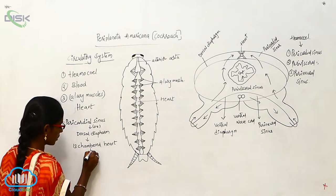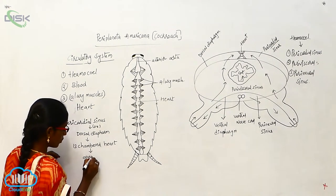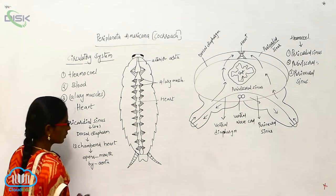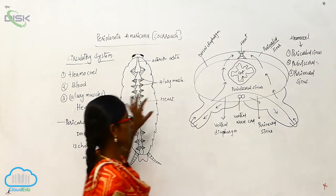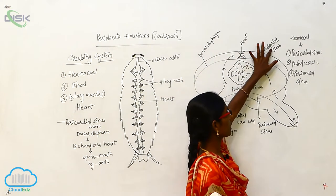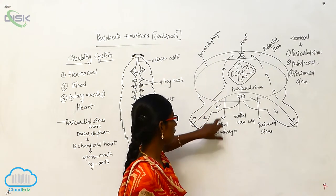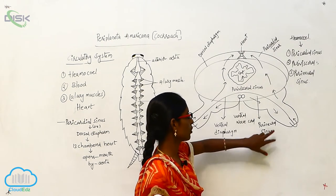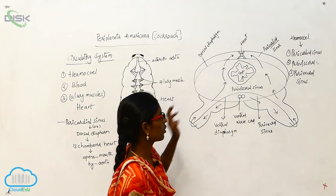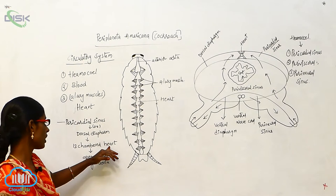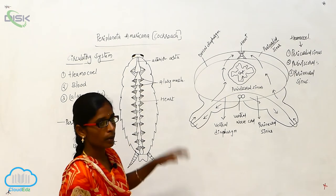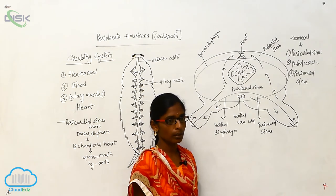The 13-chambered heart opens into the mouth by the aorta. So the dorsal diaphragm or pericardial sinus consists of the 13-chambered heart, and it opens into the mouth by the aorta. After that, the next region is the perivisceral sinus.